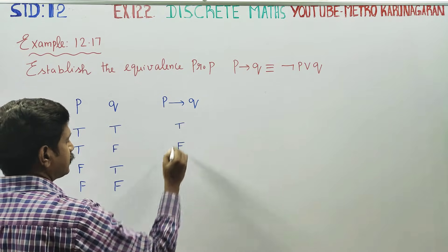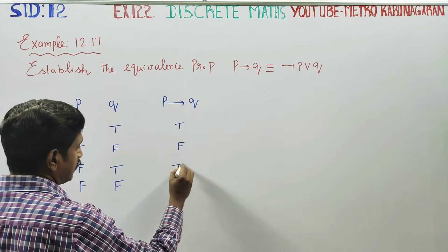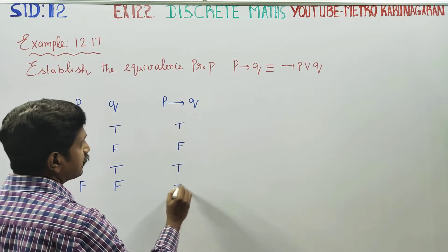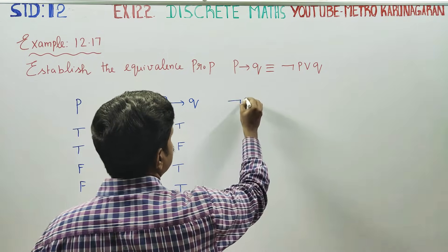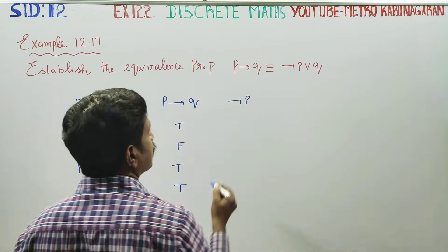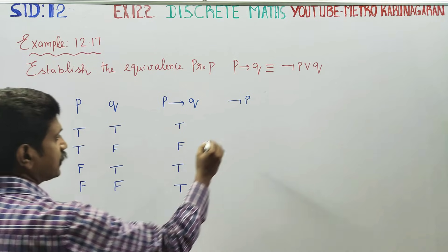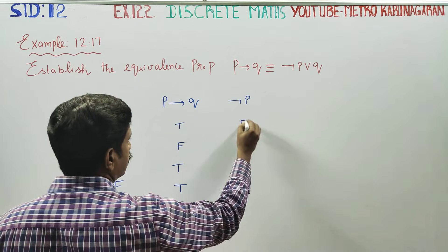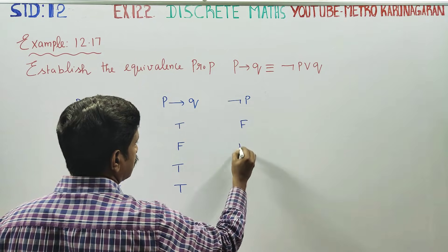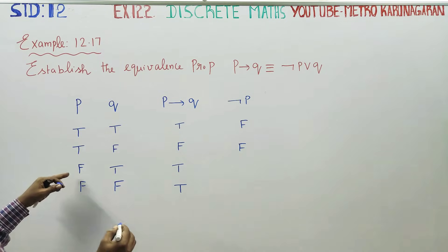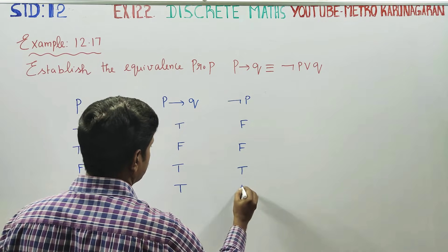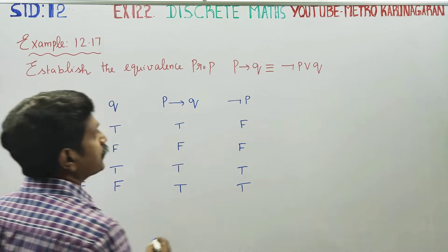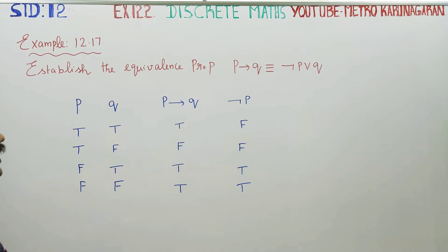Now, for Q, everybody starts with T. I will start with T for Q as well. For if P then Q, it follows the same pattern. Then negation P will start with P — that is, the opposite of P.